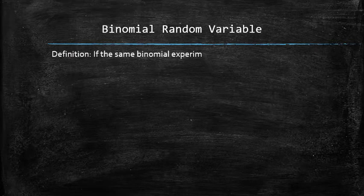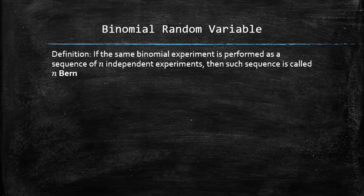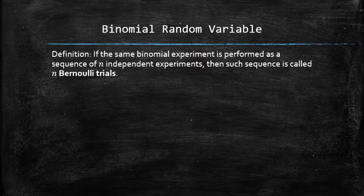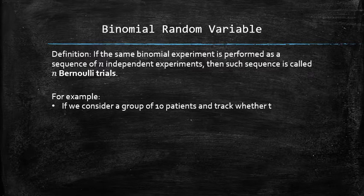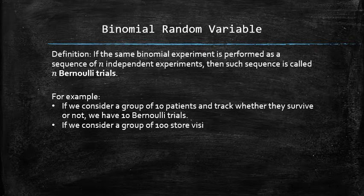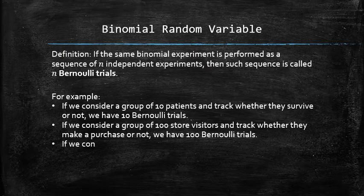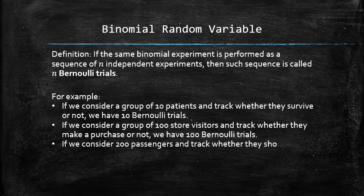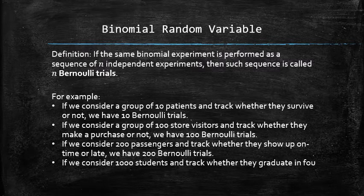If the same binomial experiment is performed as a sequence of N independent experiments, then such a sequence is called N Bernoulli trials. The key word here is independent, meaning there should be no dependency between the different instances of the experiment. For example, tracking 100 store visitors gives 100 Bernoulli trials, 200 passengers gives 200 Bernoulli trials, and 1,000 students gives 1,000 Bernoulli trials.